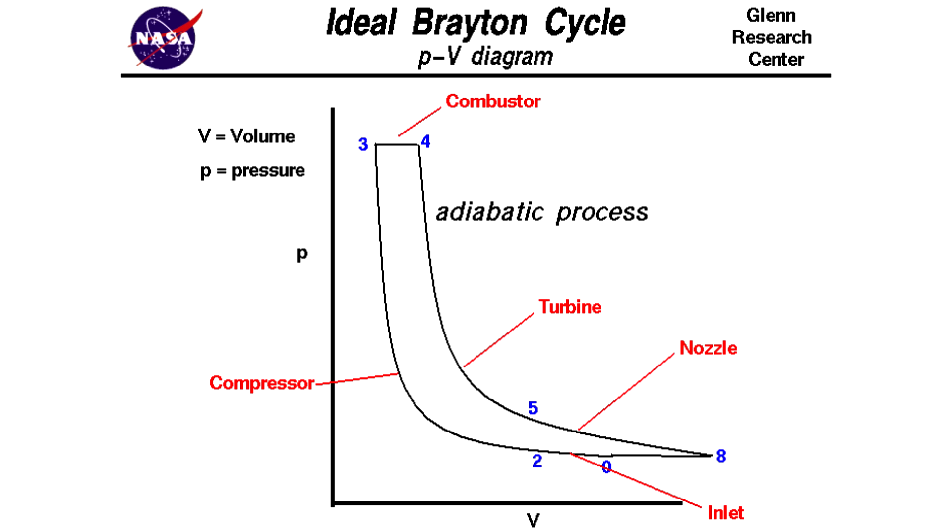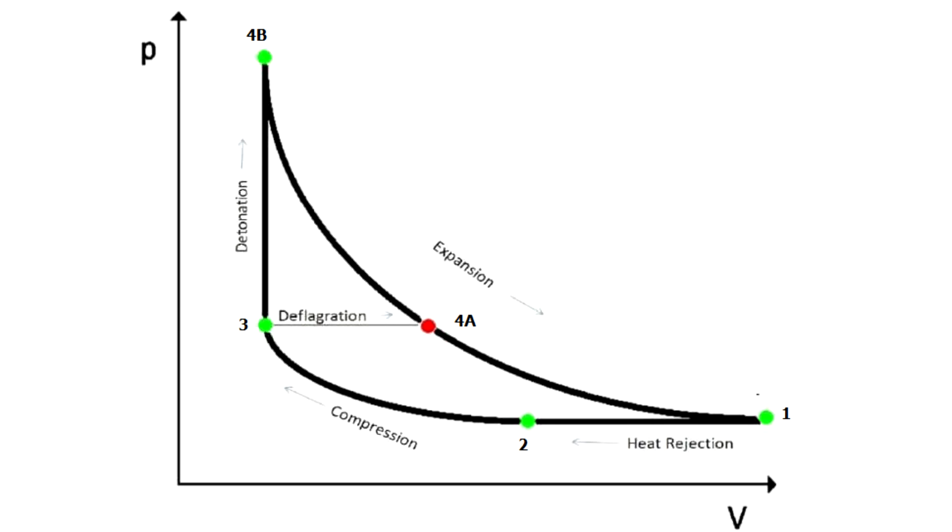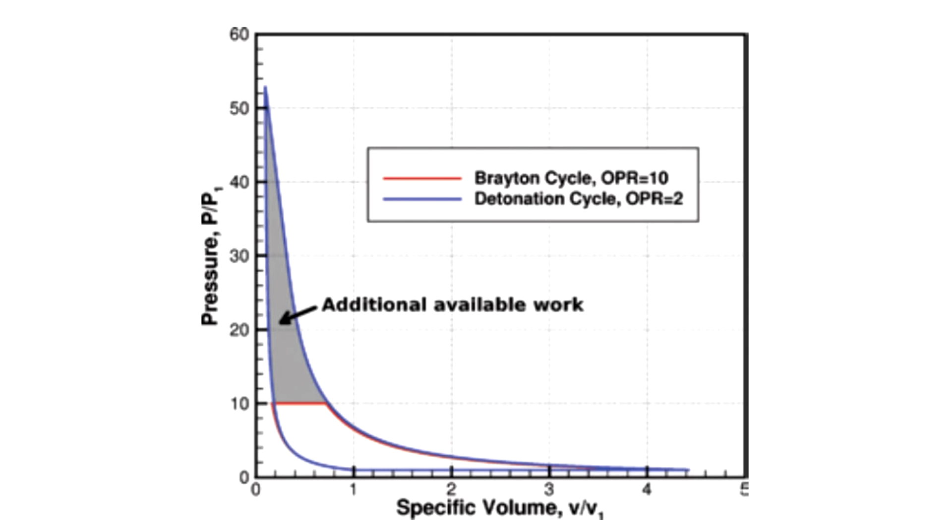Now detonation engines use the Humphrey cycle, which adds the heat at constant volume, which means instead of steps three to four going horizontally, it goes vertically. And this changes the shape of your cycle and actually gives you more area to work inside. So therefore, it's anticipated that a detonation cycle should get more power out of the same heat input.